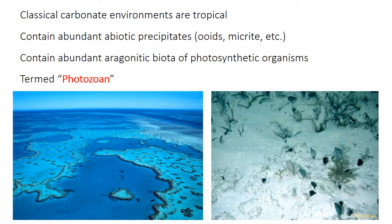The classic idea of a carbonate environment is a tropical, warm water, clear, beautiful marine setting. These classic carbonates contain abundant abiotic or inorganic precipitates like ooids or micrite. They're dominated by aragonitic organisms like green algae. And because photosynthetic or symbiotic organisms are the dominant producers of skeletal fragments in these settings, these typical warm water carbonates have been given the name photozoan carbonates.